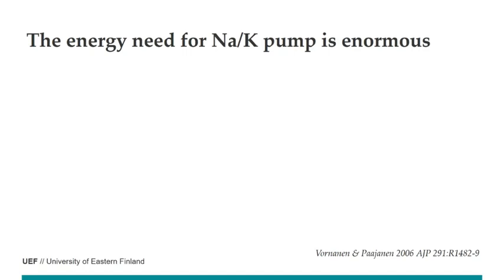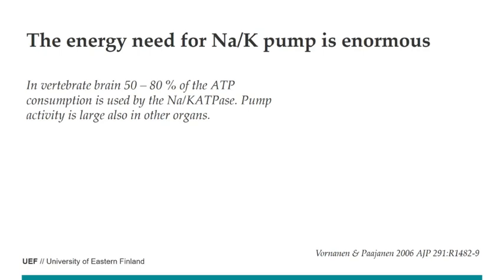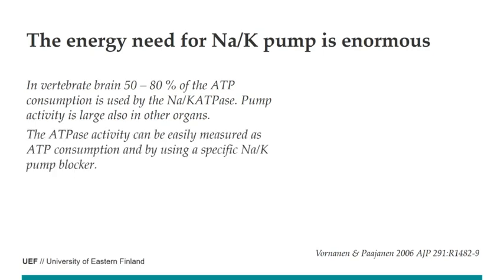Because ATP is consumed every cycle, an enormous amount of energy is needed. In the brain, for example, almost 80 percent of ATP consumption is used by the sodium-potassium ATPase. This high activity is present in other organs too, making the loss of ion gradients a very serious problem — the pump must work continuously. Its activity can be measured by tracking ATP consumption while applying a specific pump blocker.